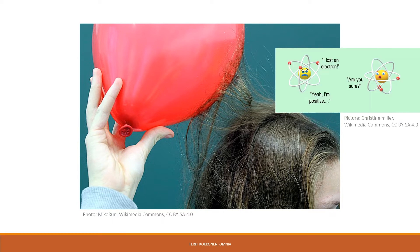Rubbing a balloon against hair causes electrons to move from the hair to the balloon. This gaining of electrons gives the balloon an overall negative charge, while the hair, with its loss of negative charges, now has a net positive charge. Your positively charged hair is attracted to the negatively charged balloon and starts to rise up to meet it.